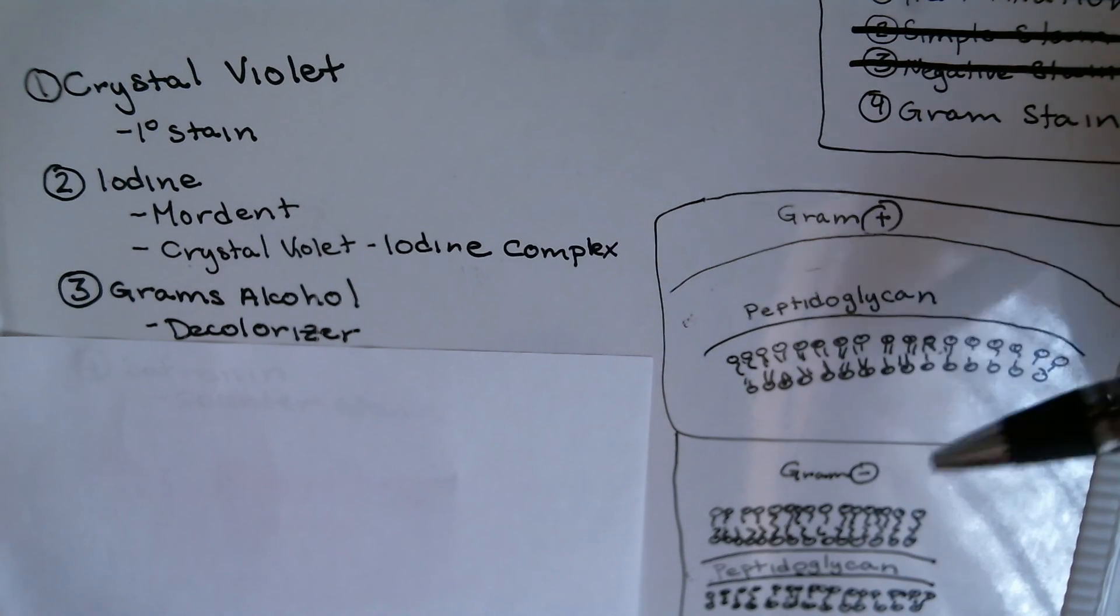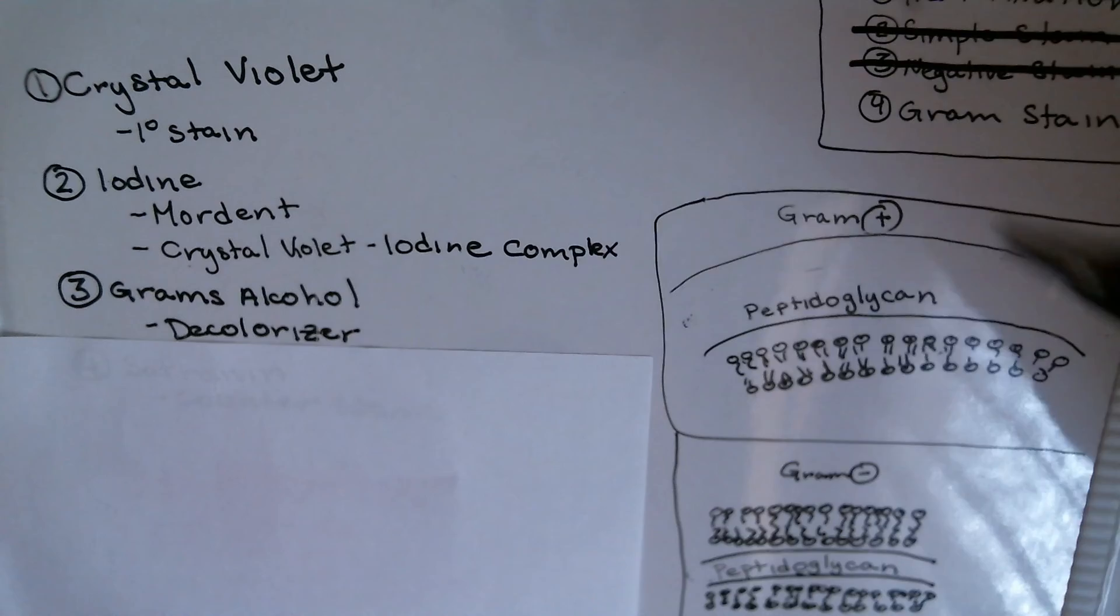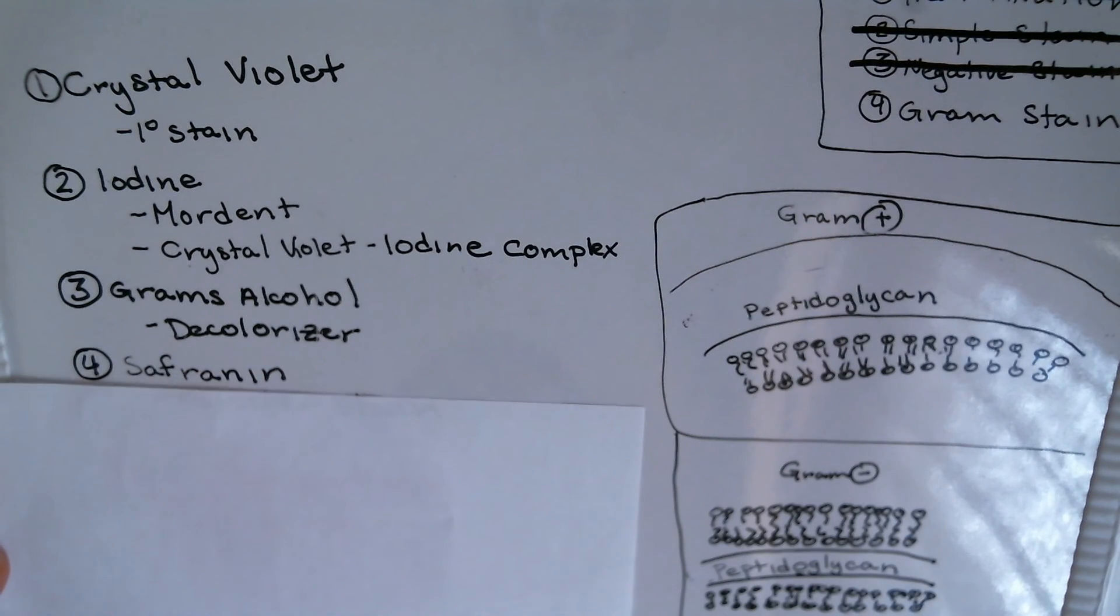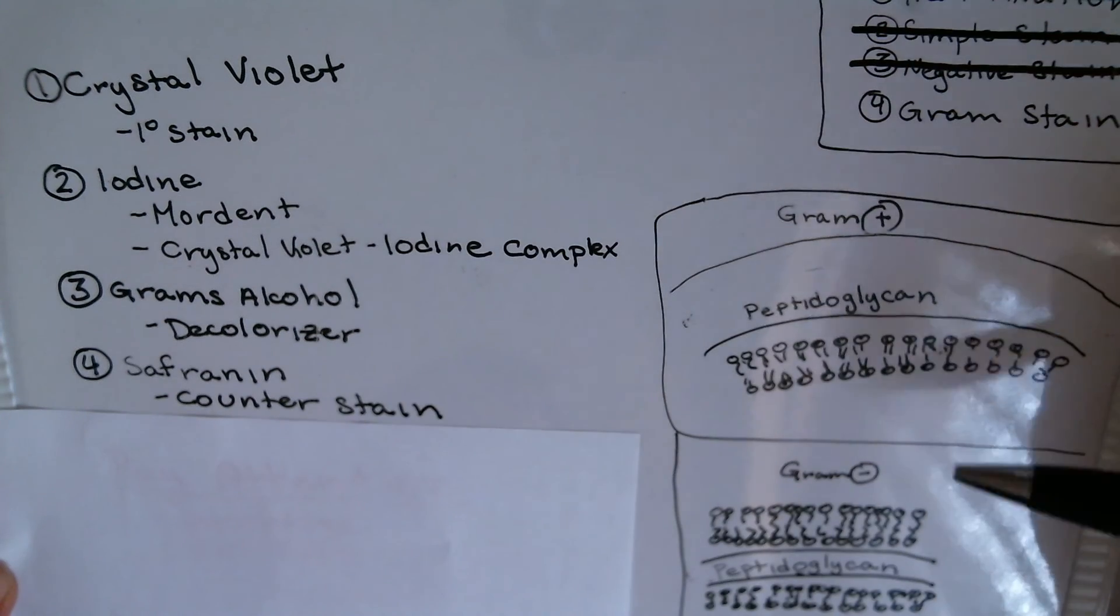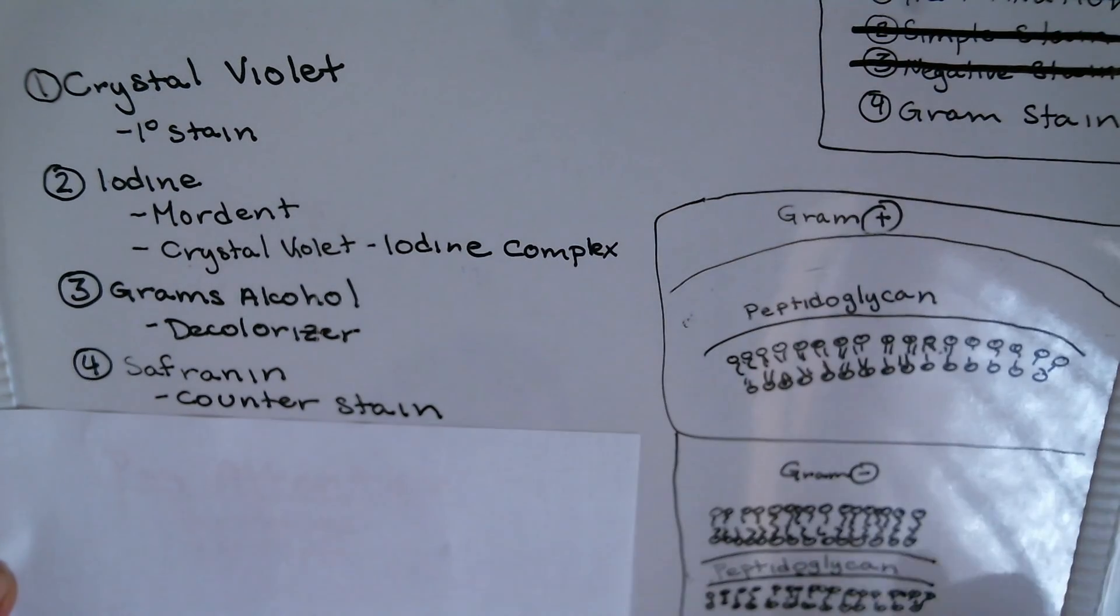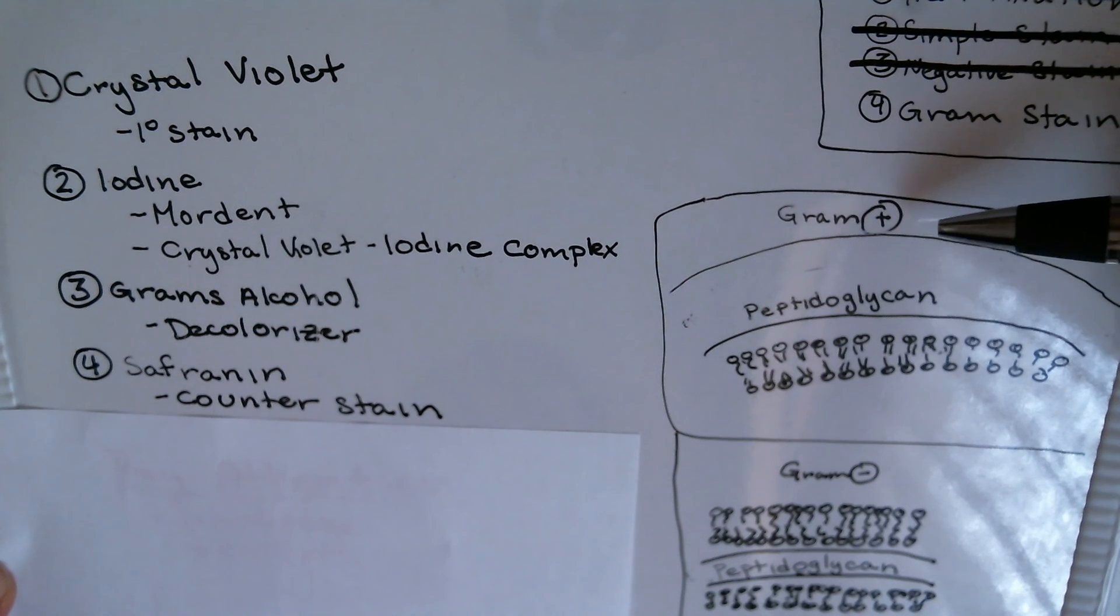Next up we'll have our safranin, which is considered to be our counterstain. That will then stick to the peptidoglycan layer of the gram-negative cells. It will not stick to the gram-positive cells because the gram-positive cells have already taken up the primary stain.